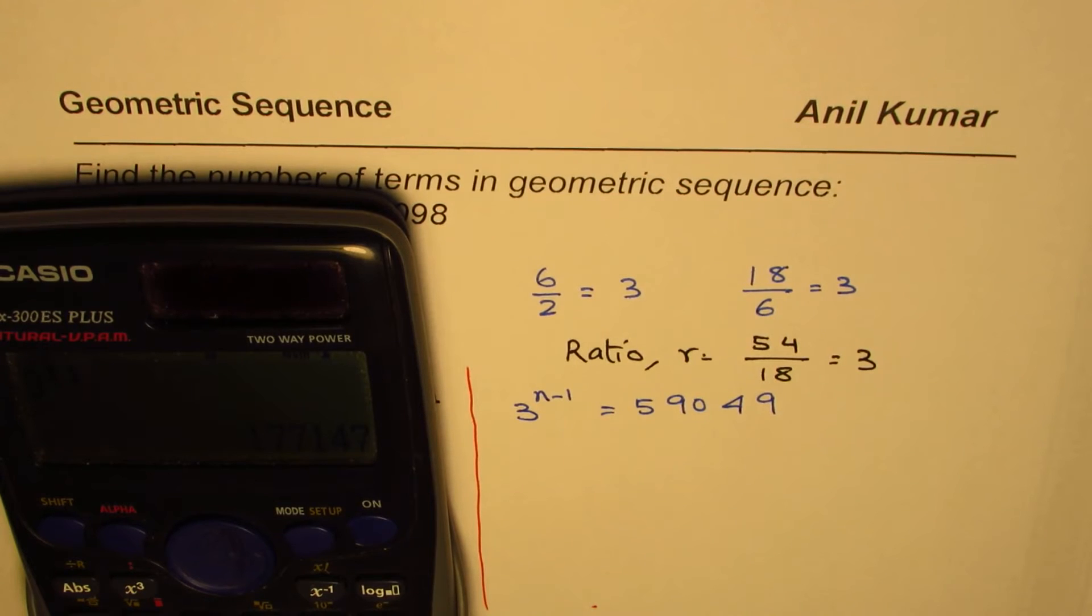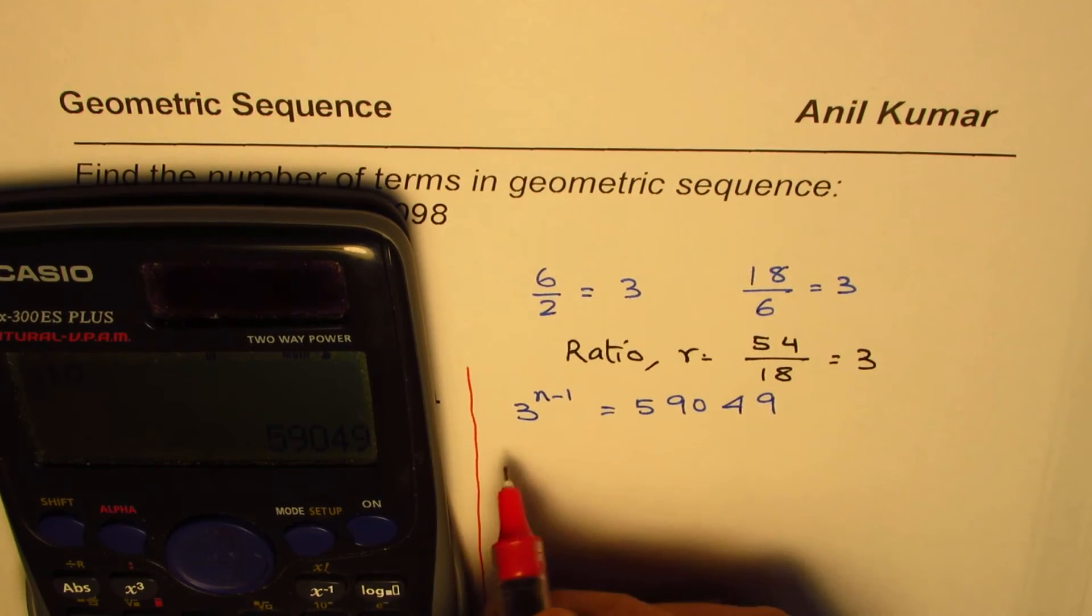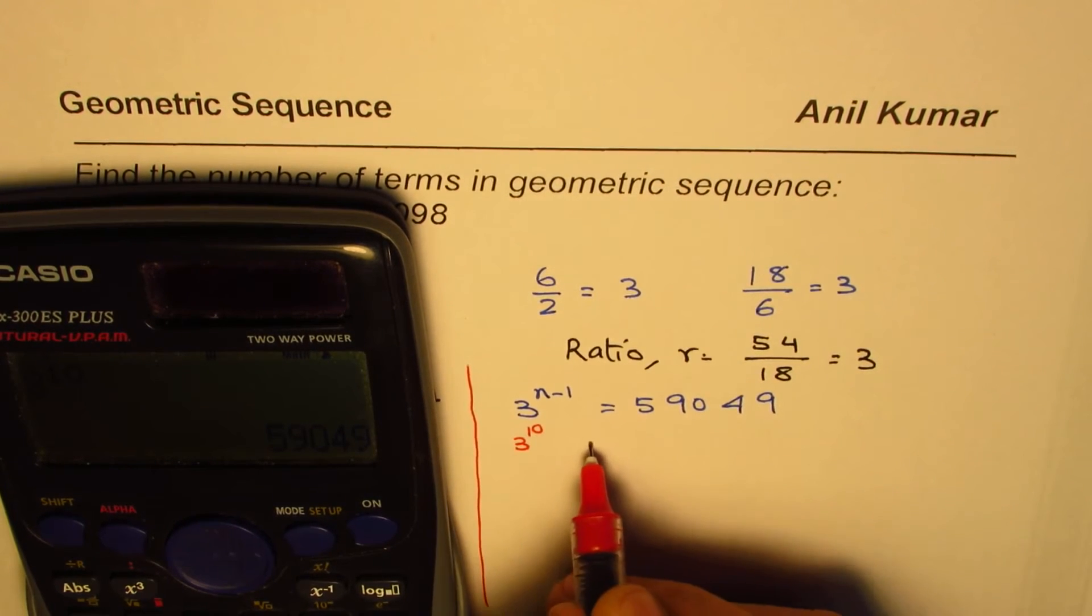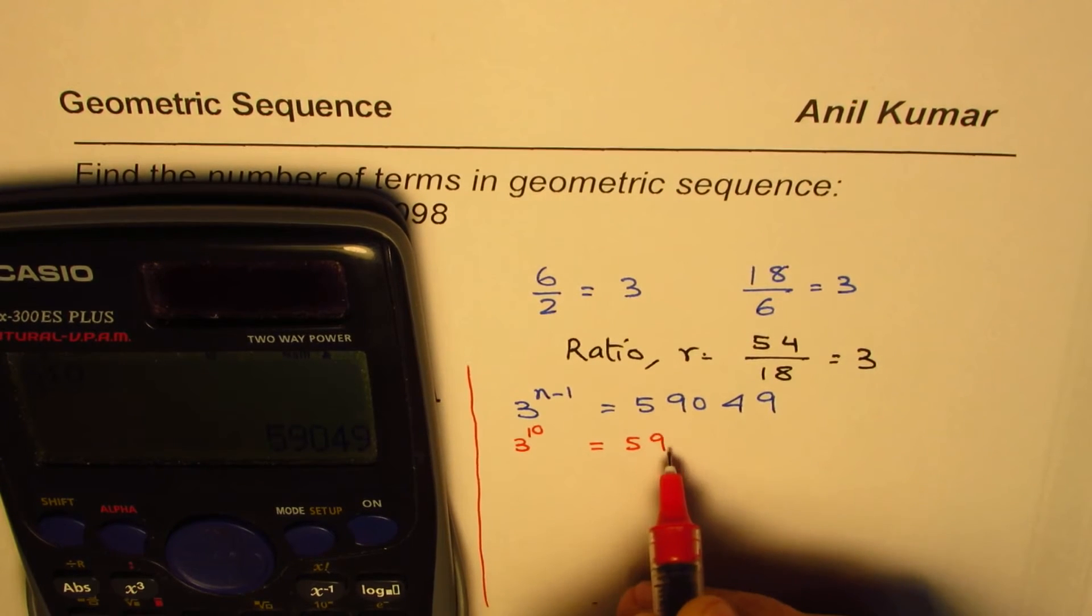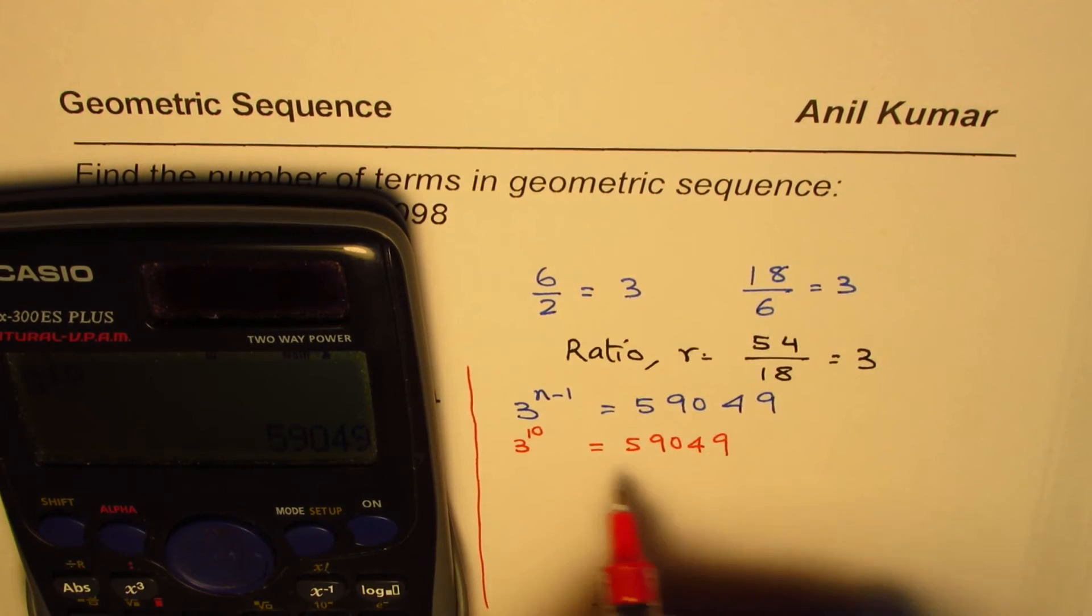You get a bigger number, you try the smaller number, so 10. You know 3 to the power of 10 is the same number, so that is one way of doing it. So when you try then you say well 3 to the power of 10 is 59049 and that means, if you do this way, this is method number one.